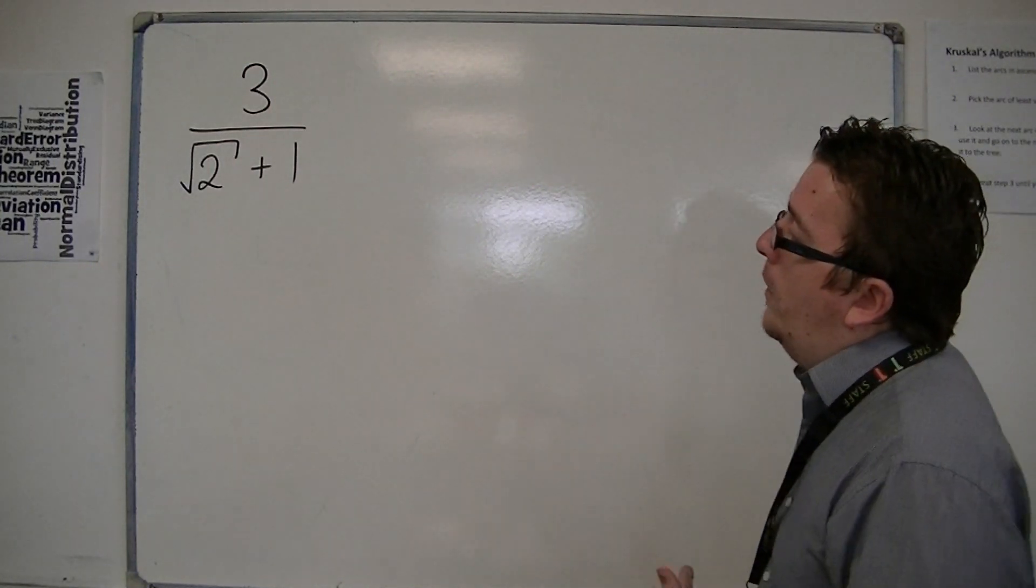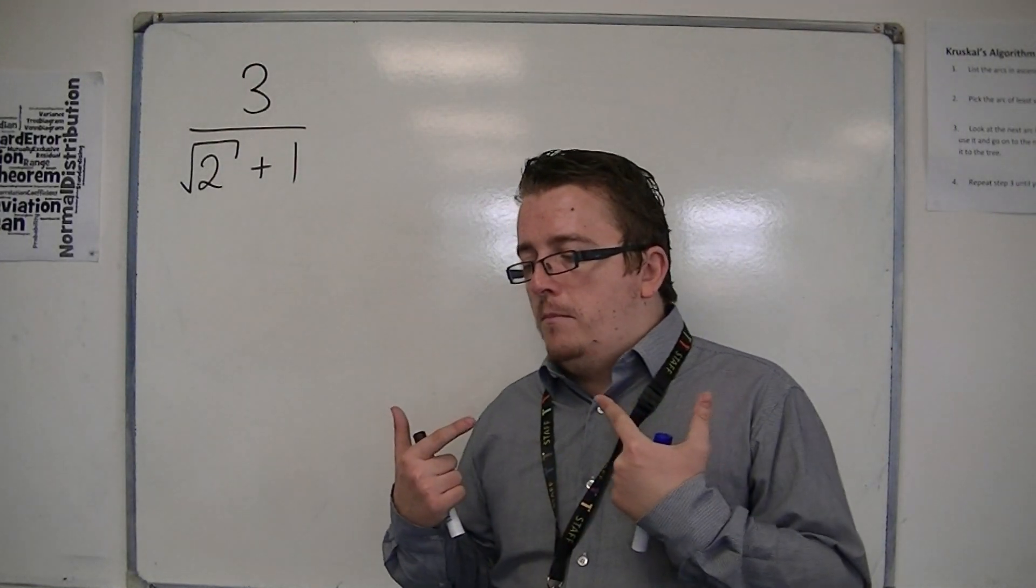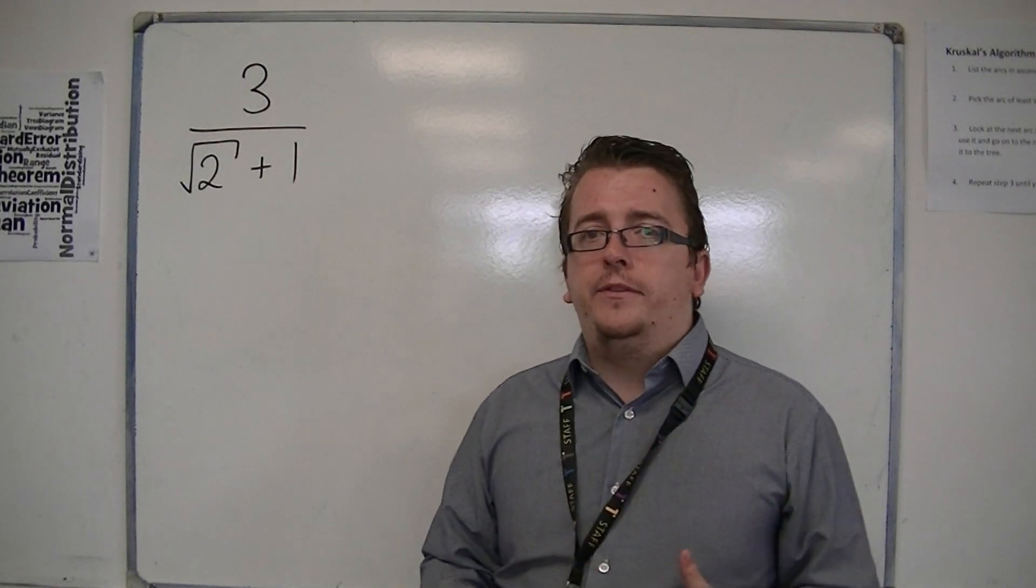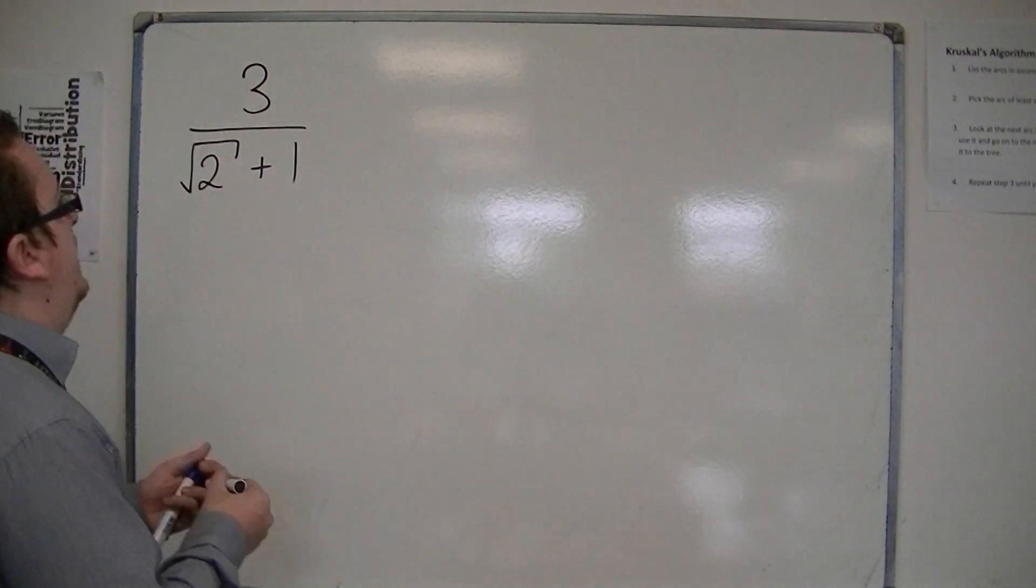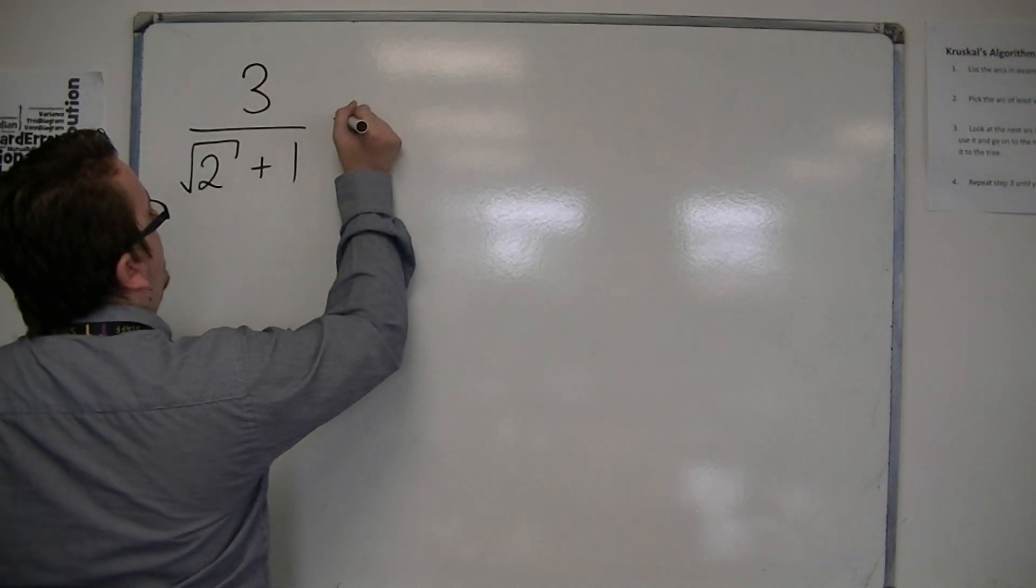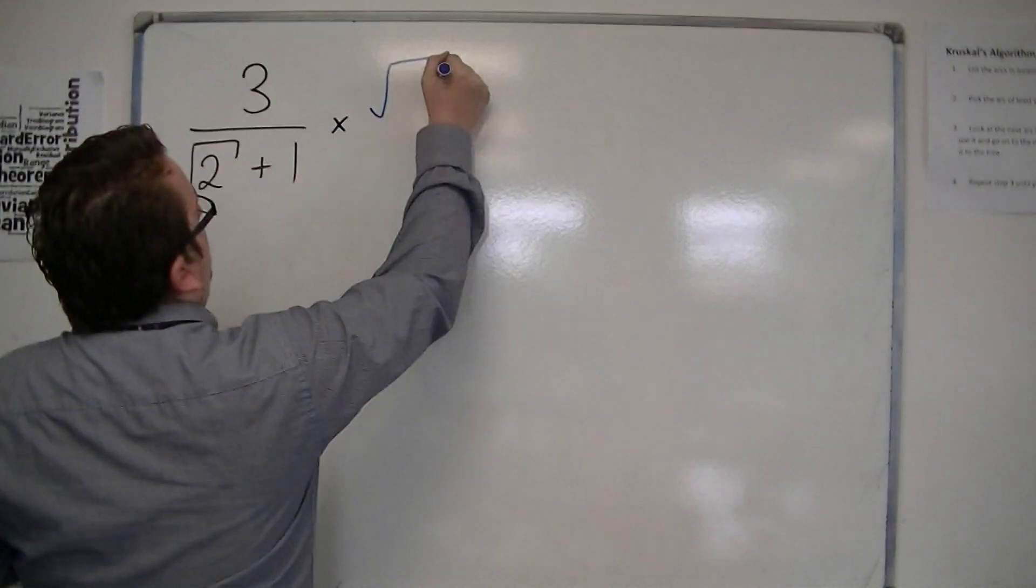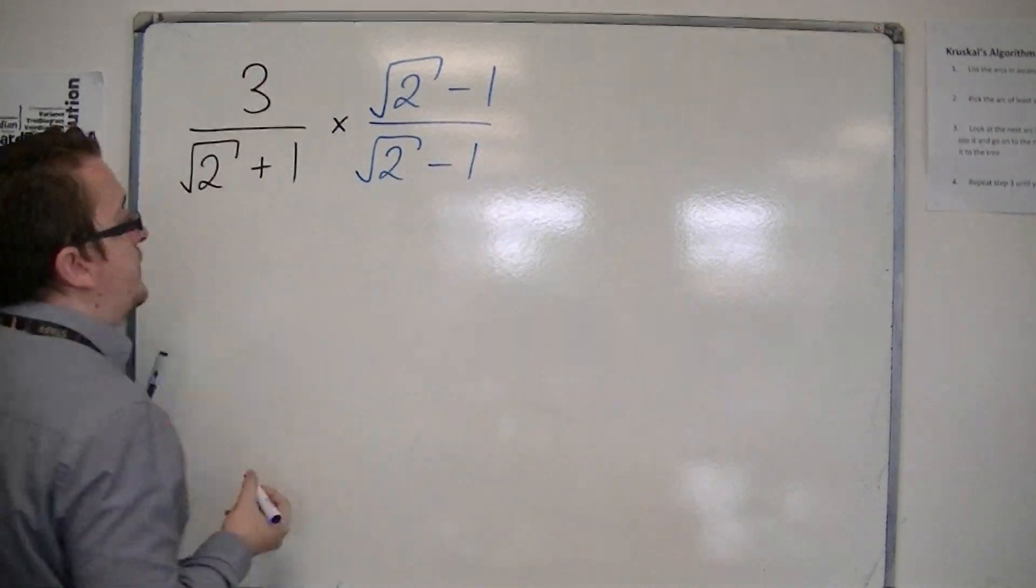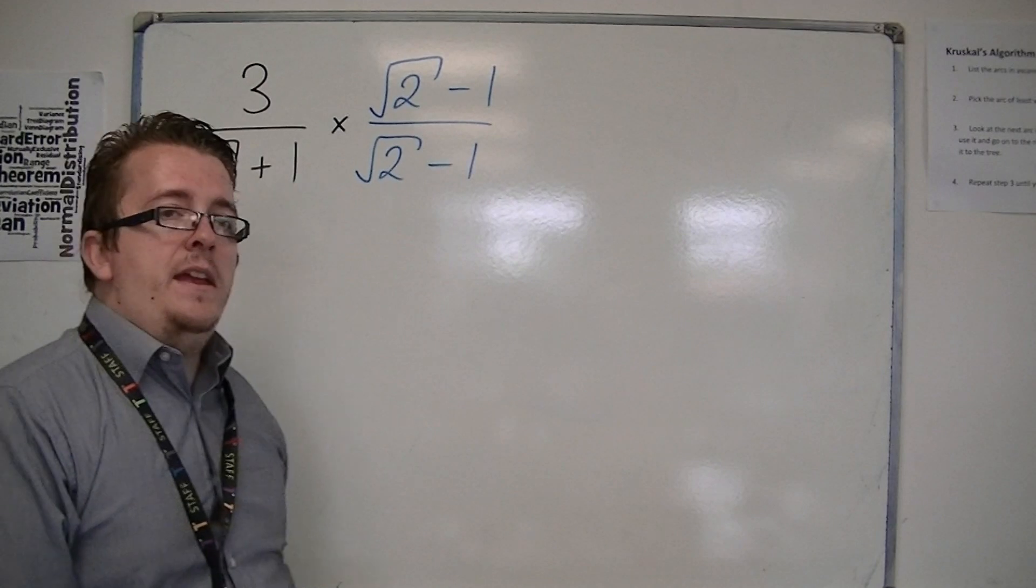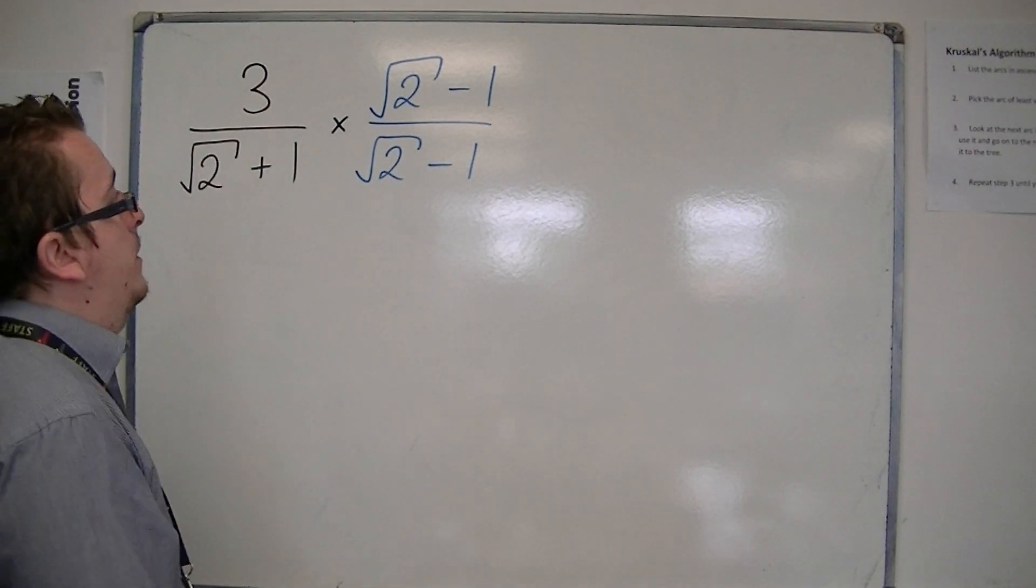And really what it comes down to is the use that we found from the difference of two squares. So how I mean that is that if I multiply this by root 2 minus 1 over root 2 minus 1, then it's going to be just waiting to see what happens here.